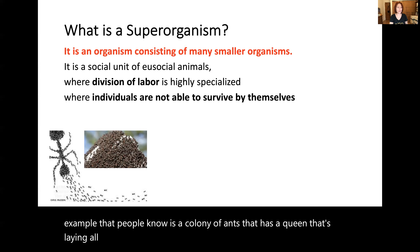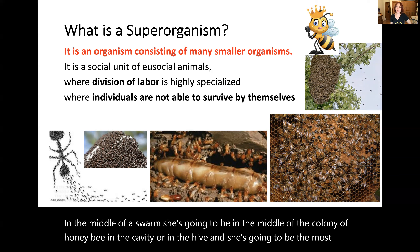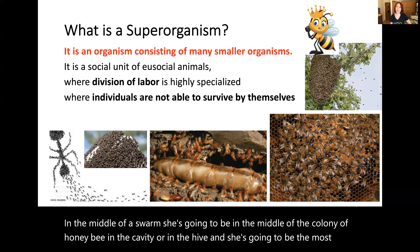A queen has the standard abdomen — she's really very different from the rest of the females in the colony, and the females will do all the work for the queen and for the betterment of the colony. The queen in the center along with a group of worker bees is a famous example of that behavior. She's going to be in the middle of a swarm, in the middle of the colony in a cavity or in a hive, and she's the most important bee for the reproduction of the colony. But every single bee will have a function and will help the colony survive.